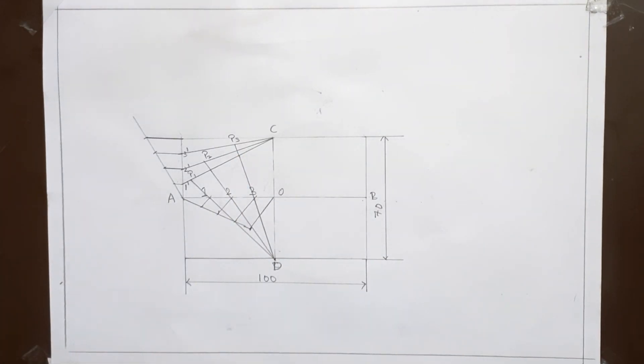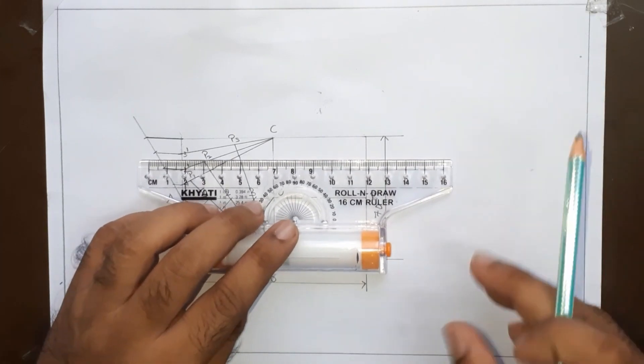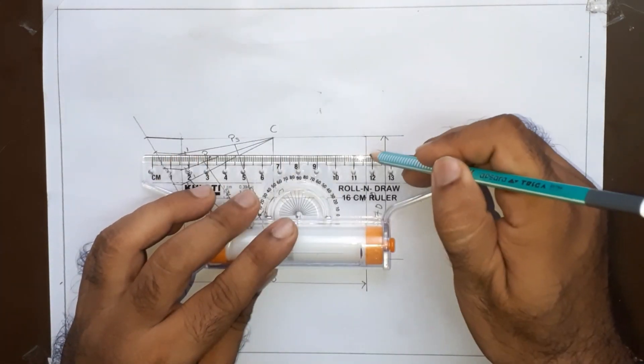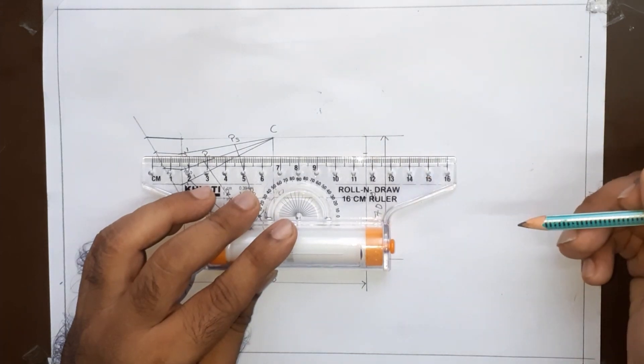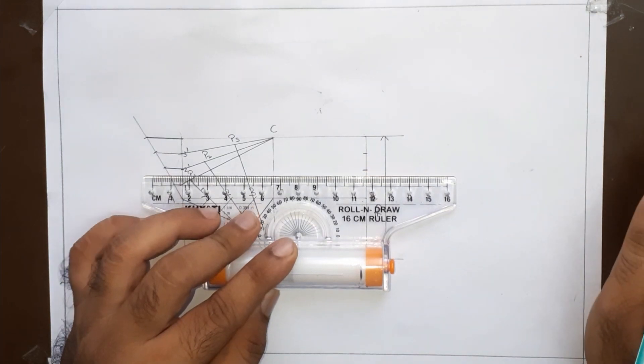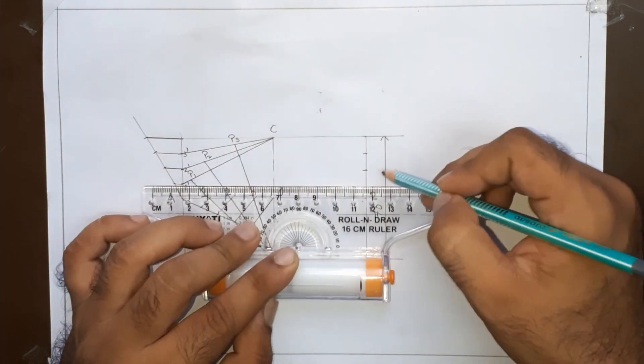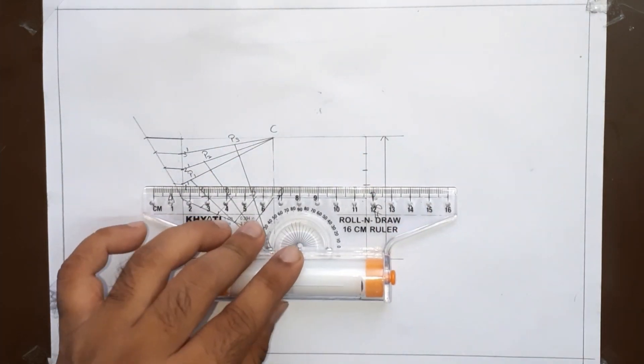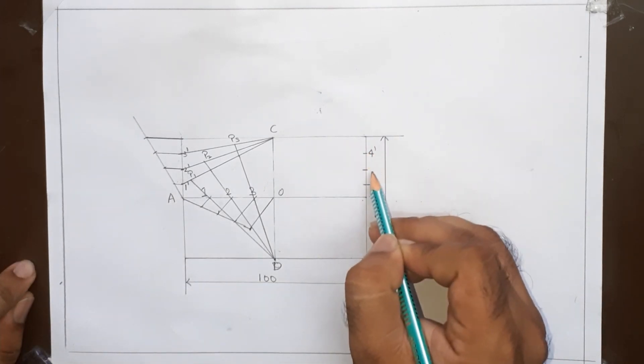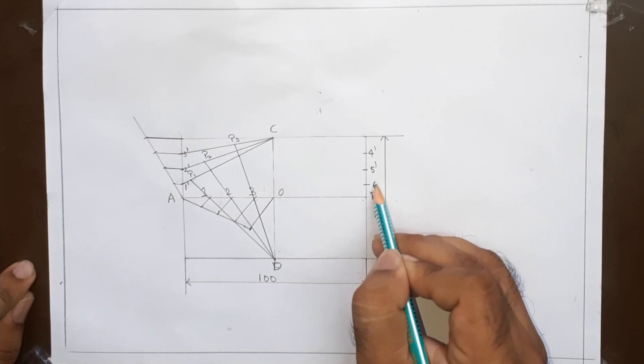Now we have to repeat the same step across all the 4 quadrants to obtain the remaining points. From this point, we will mark this point. Then from this point, we will easily mark this point. Next from this point, we will easily mark this point. Let these points be equal to 4 dash, 5 dash and 6 dash.